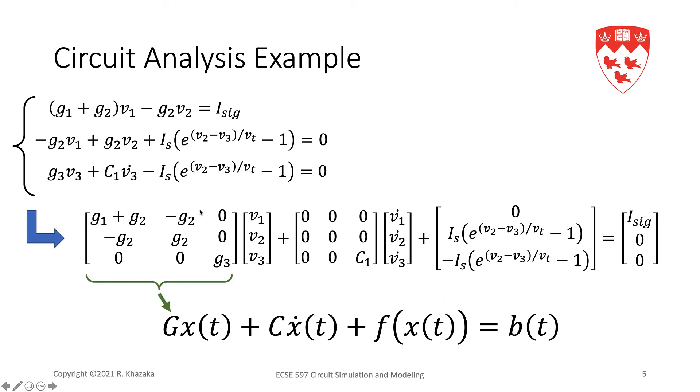The matrix multiplying X, we call it the G matrix. Typically the G matrix contains the contributions of the memoryless elements. We have the C matrix multiplying X_dot. This contains the contribution of the memory elements. We have a nonlinear vector containing the contribution of the nonlinear elements.